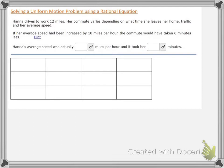If her average speed had been increased by 10 miles per hour, the commute would have taken six minutes less. So now we need to figure out what her average speed actually was in miles per hour and how many minutes it took her to drive to work.